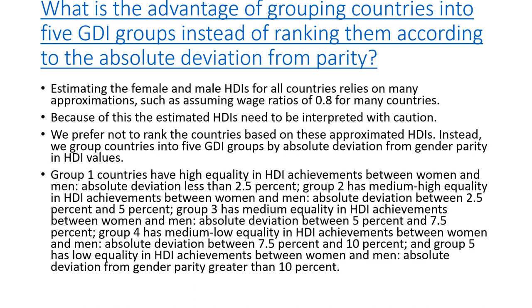Countries are grouped into five GDI groups based on absolute deviation from gender parity in HDI values. Group 1 has high equality, with absolute deviation less than 2.5%. Group 2 has medium-high equality, with deviation between 2.5% and 5%. Group 3 has medium equality, deviation between 5% and 7.5%. Group 4 has medium-to-low equality, deviation between 7.5% and 10%. Group 5 has low equality, with absolute deviation greater than 10%.